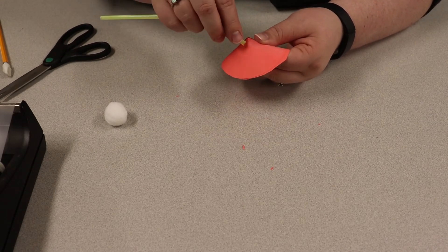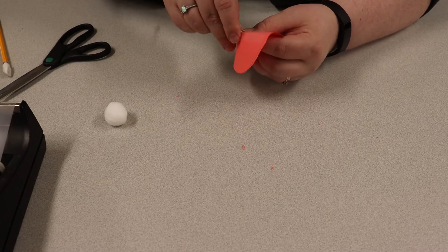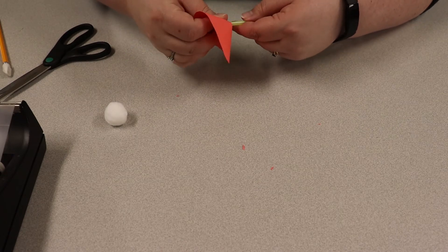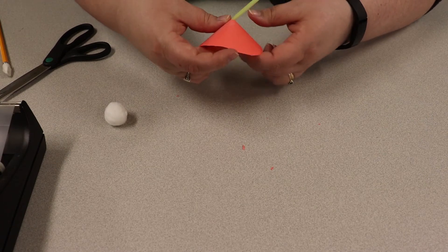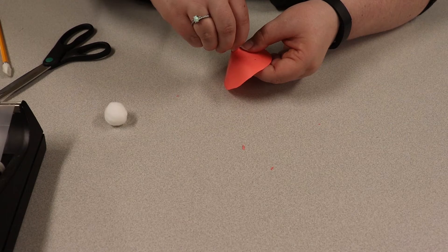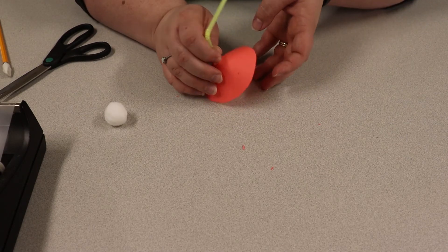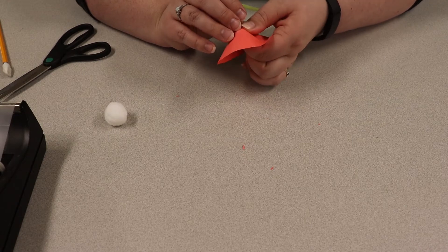Alright, stick our straw in there, and then to make sure that we have a nice good seal, we'll make sure that that is near the bottom there. We're gonna take some more tape here, and I have some little pieces here on my desktop from the clippings. Make sure you clean those up.